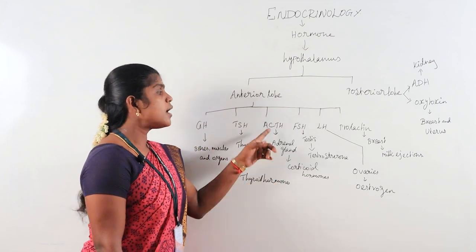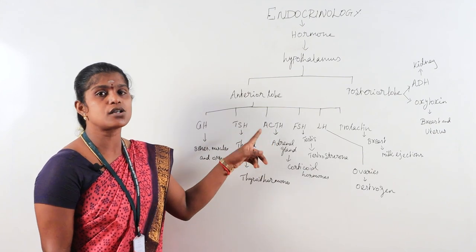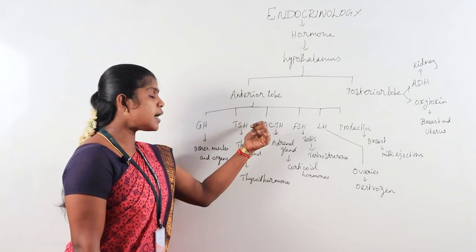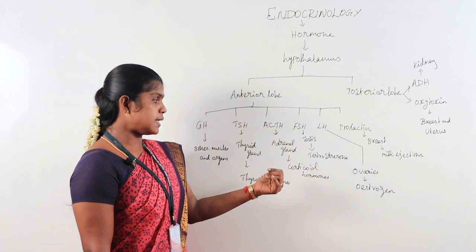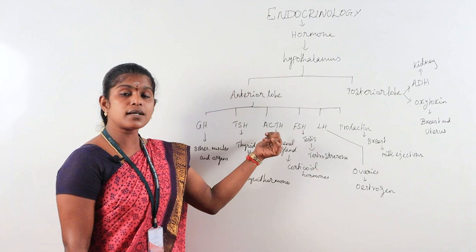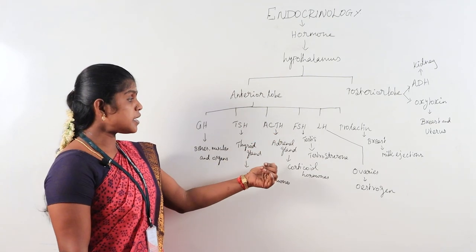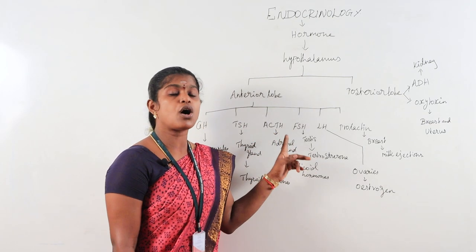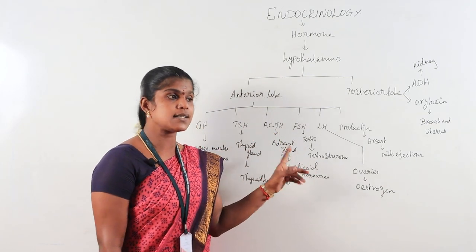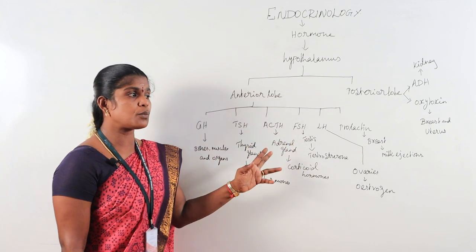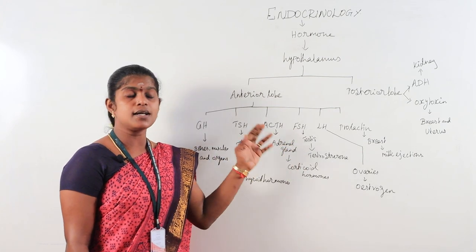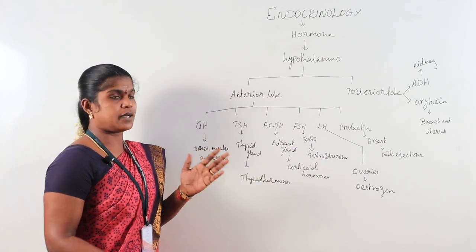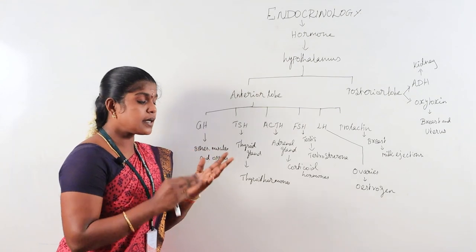ACTH is adrenocorticotrophic hormone and acts on the adrenal gland. The adrenal gland is divided into two parts: medulla and cortex. The medullary hormones act on the medulla.